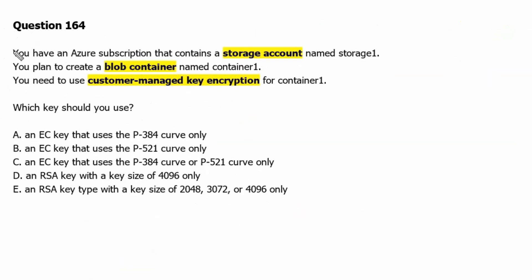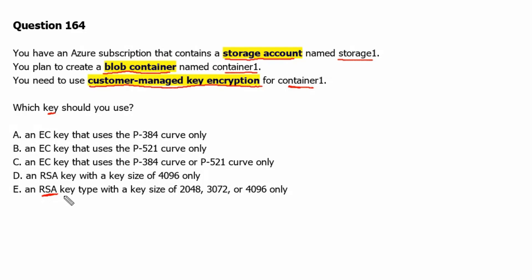Question 164. You have an Azure subscription that contains a storage account named storage1. You plan to create a blob container named container1. You need to use customer managed key encryption for container1. Which key should you use? As we know from the previous question, it supports RSA key type and the key sizes are 2048, 3072, and 4096. Therefore, option E is the correct one.